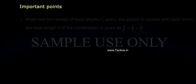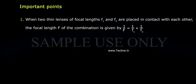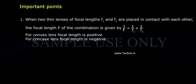Important points. When two thin lenses of focal length F1 and F2 are placed in contact with each other, the focal length F of the combination is given by 1 by F equals to 1 by F1 plus 1 by F2.